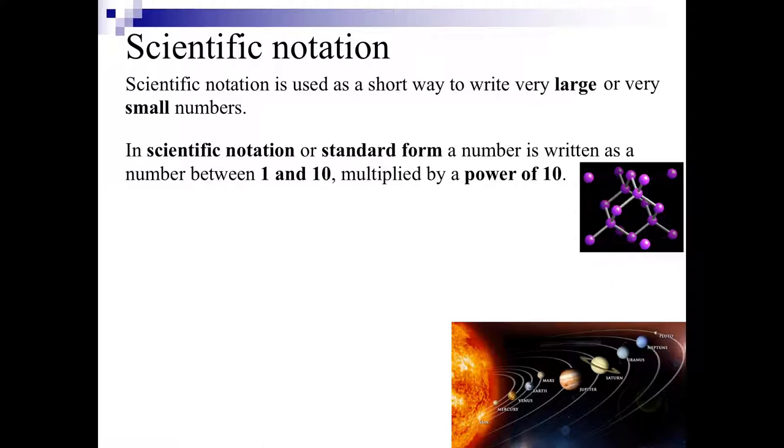Now in scientific notation or standard form, a number is written as a number between 1 and 10, that's the first part, and then we multiply that by a power of 10. So here you can see two examples.